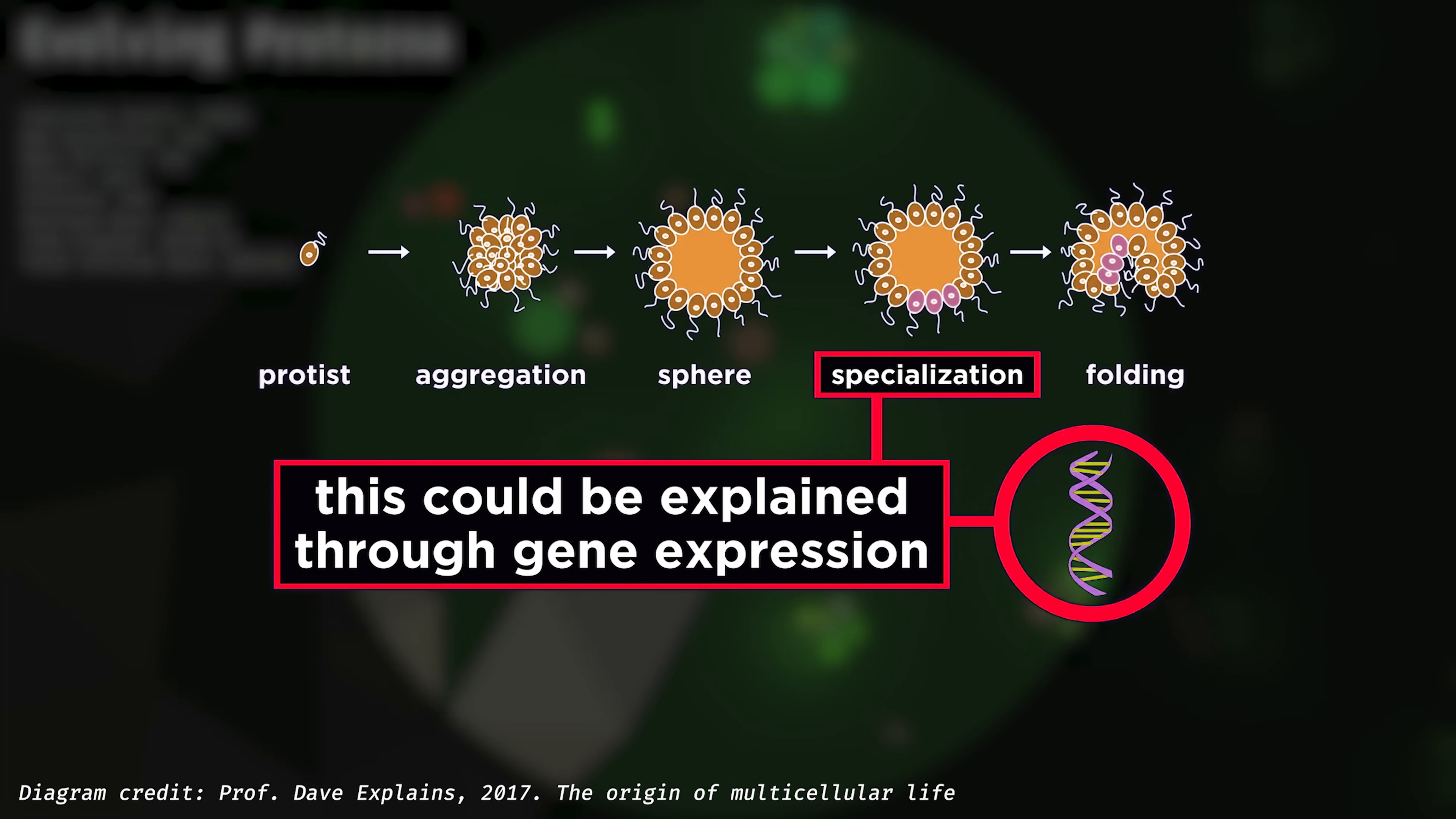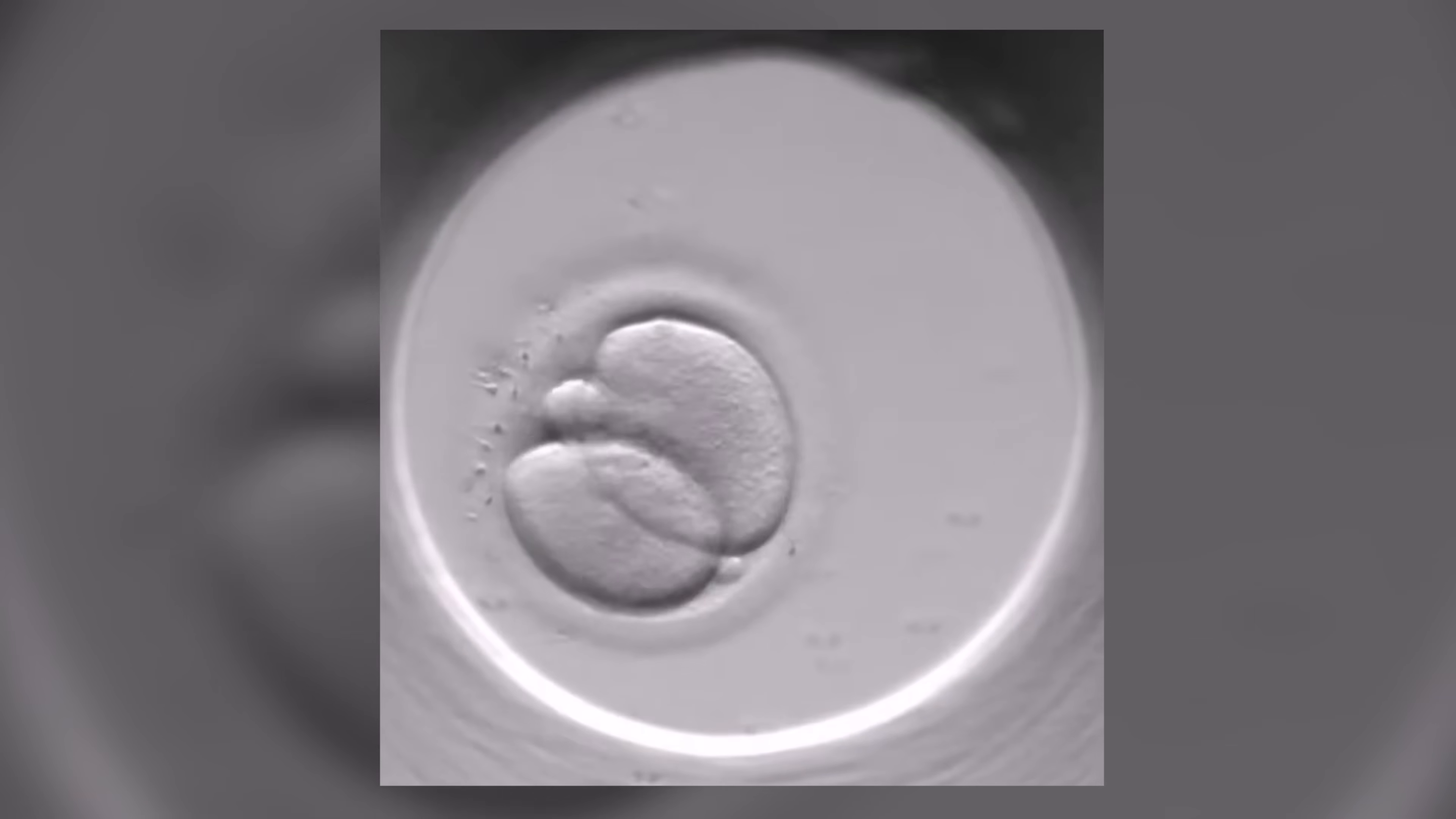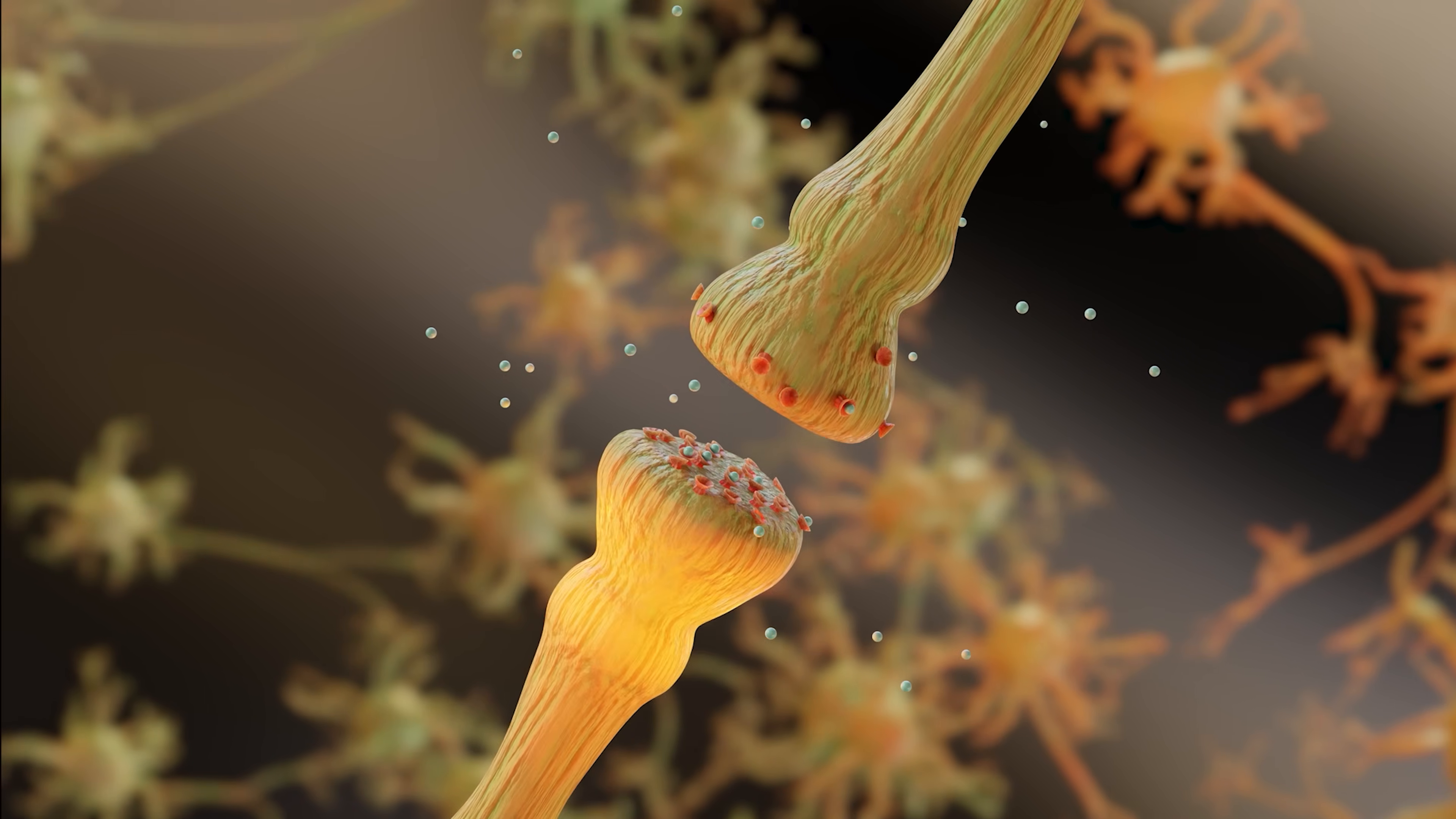Specialisation is the process that occurs during development of multicellular systems, where cells take on specialised roles. For instance, at first, the developing multicellular organism mostly consists of what's called stem cells. These are cells without unique function, but rather can transform into other kinds of cells, such as liver cells or neurons.